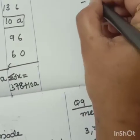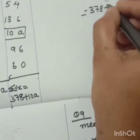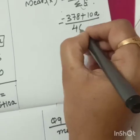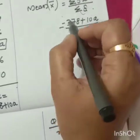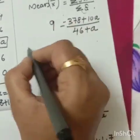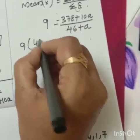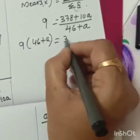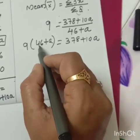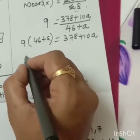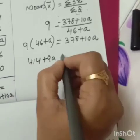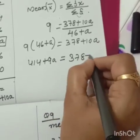Put here. 378 plus 10 a divided by 46 plus a. Mean given 9. In the question given. Cross multiply. 9 into 46 equal to multiply. 9 into 46 and 9 into a. 9 into 46, we will get 414 plus 9a equal to 378 plus 10 a.